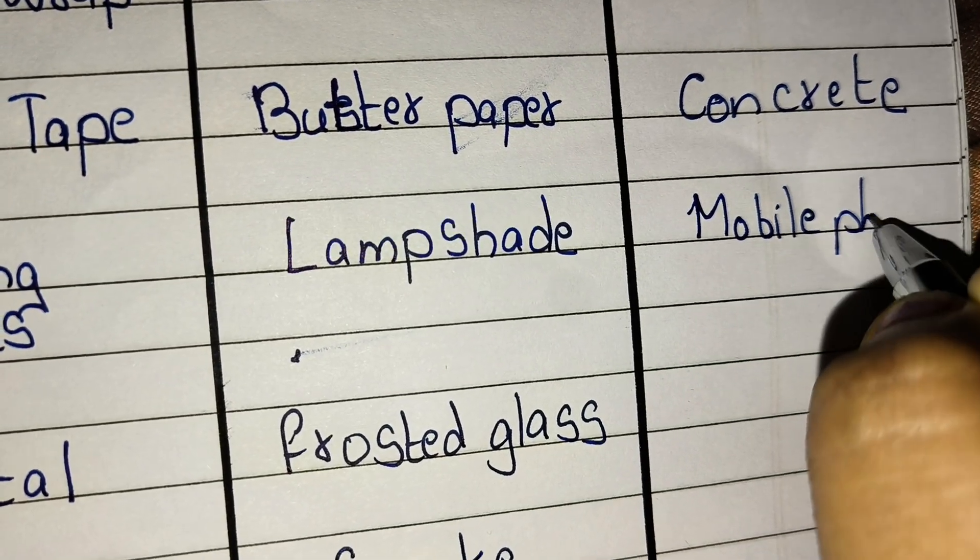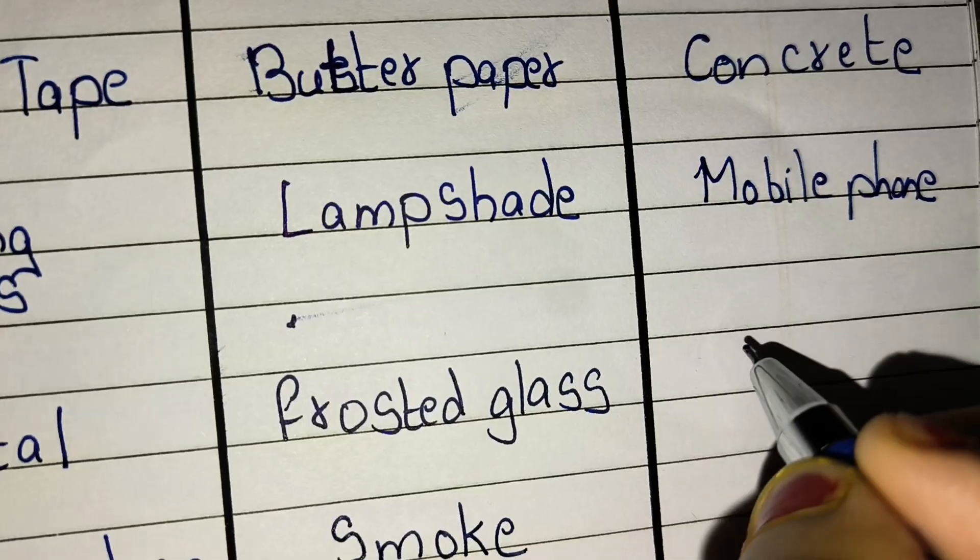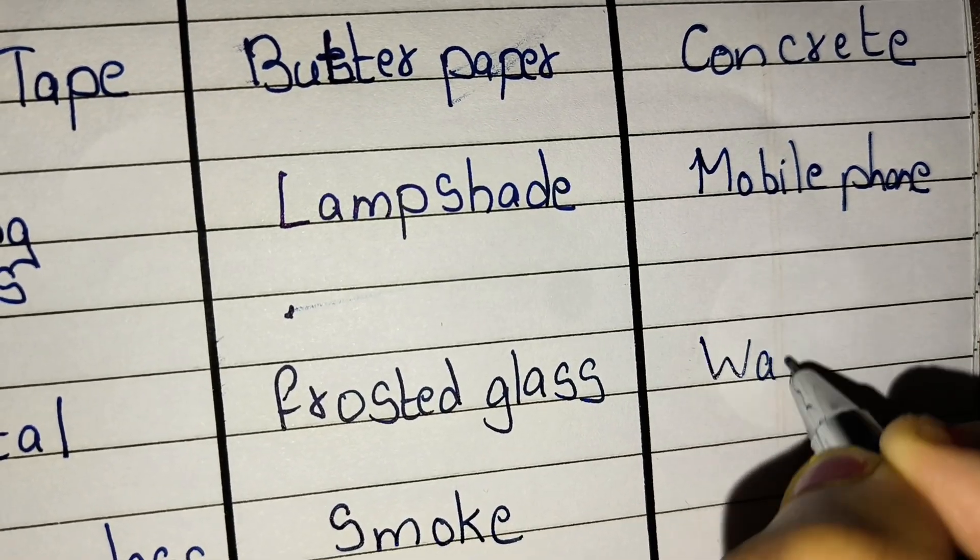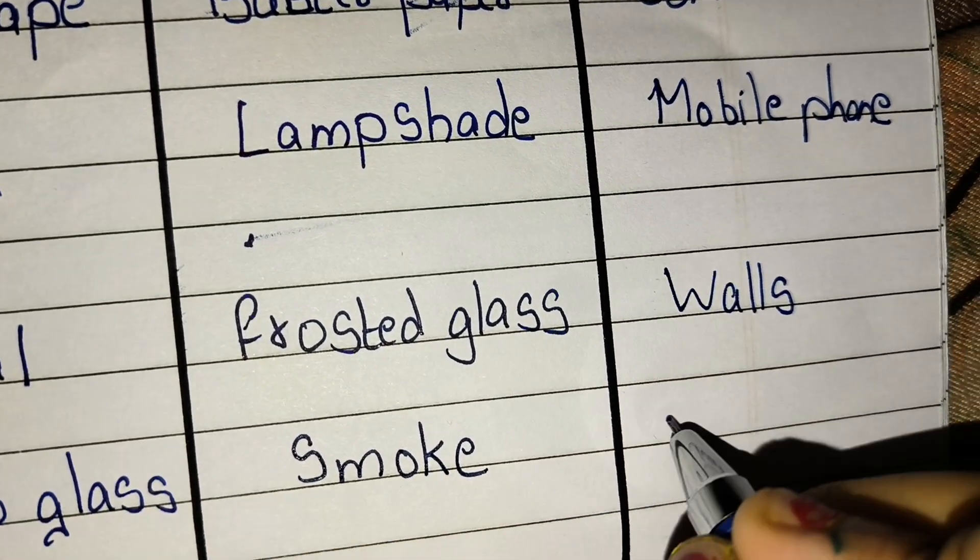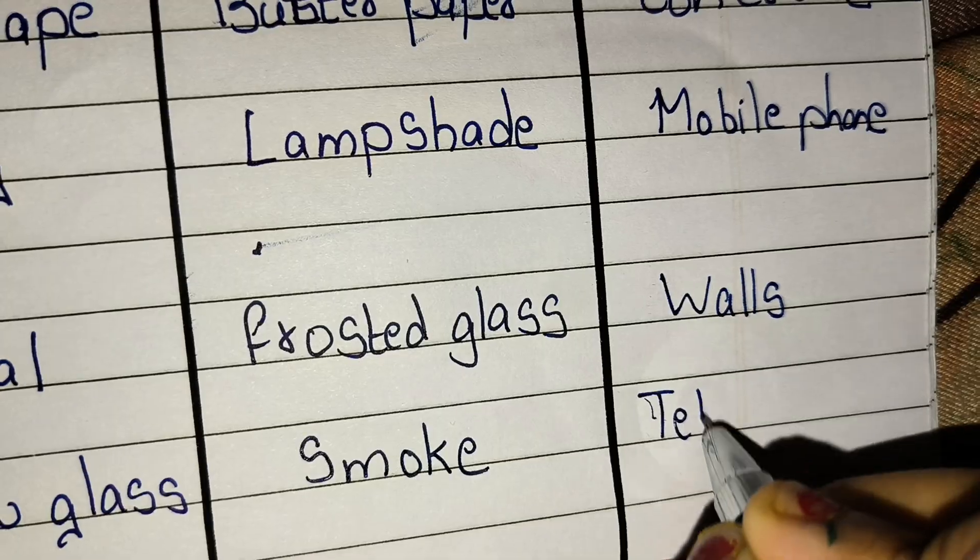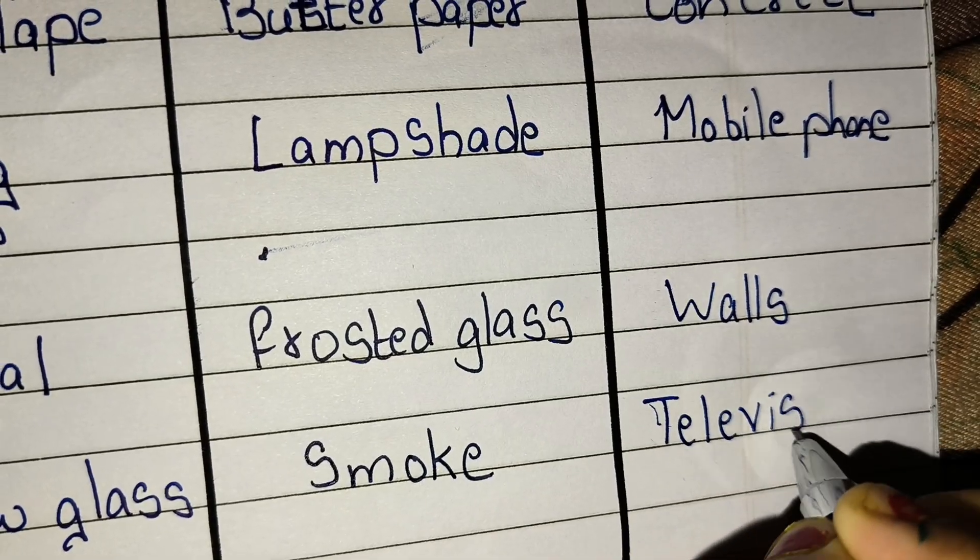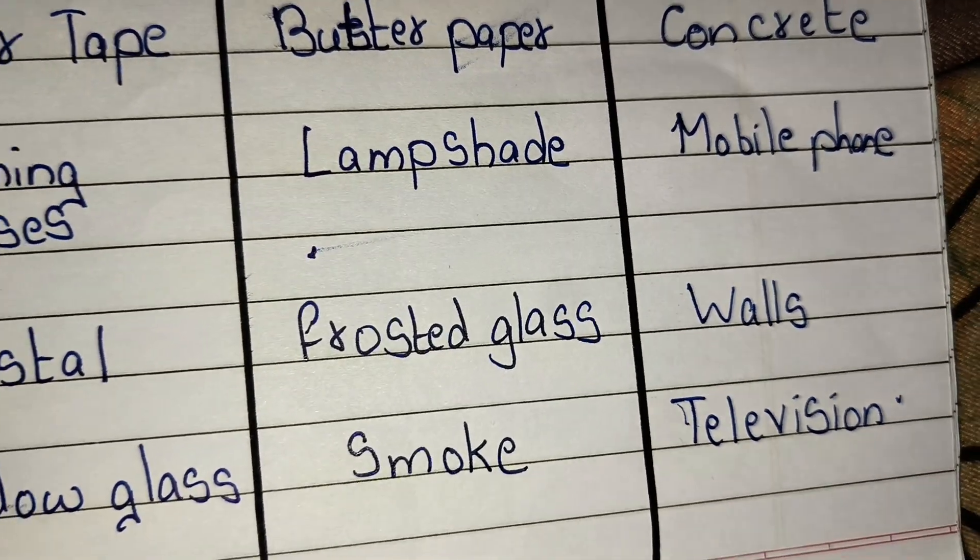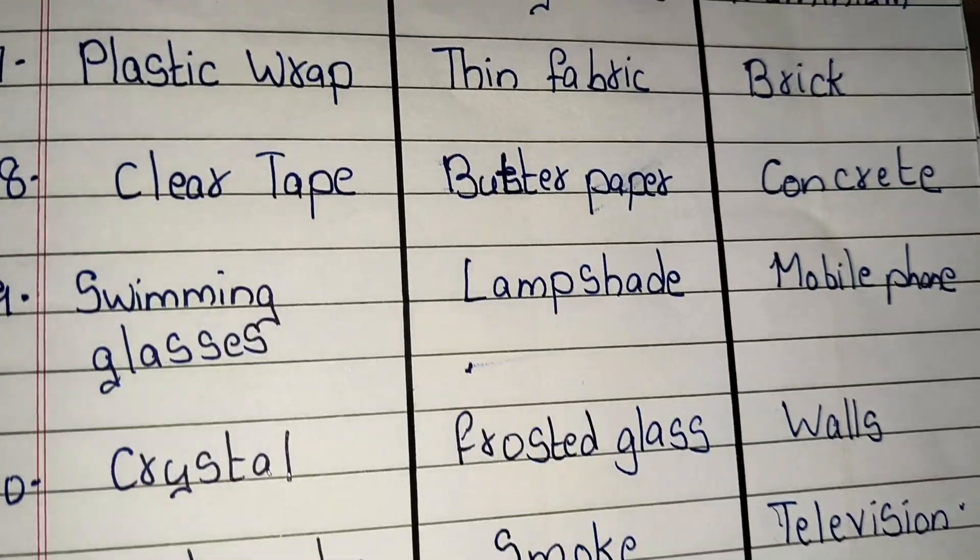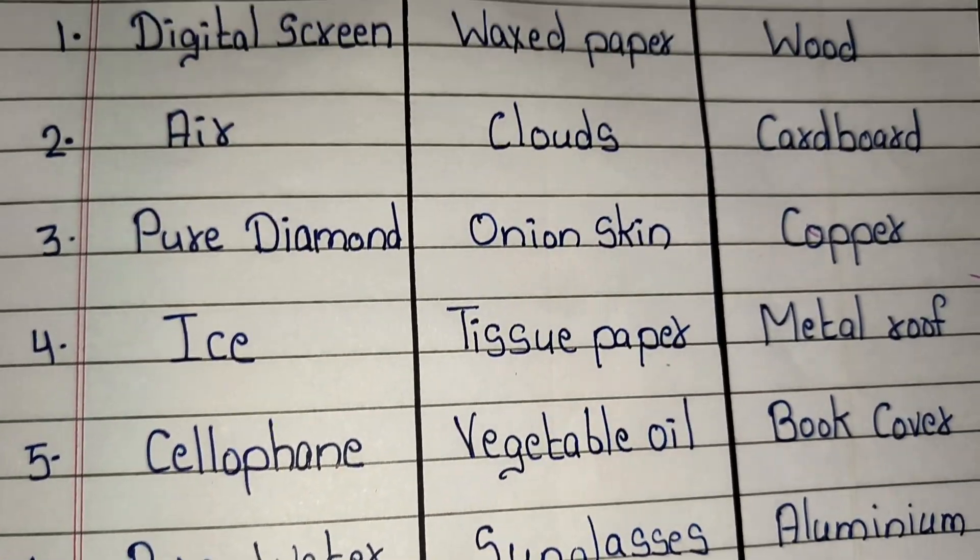Examples of opaque: mobile phone, walls, television. Thank you friends, thanks for watching, happy learning.